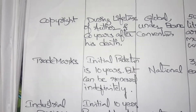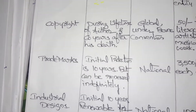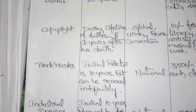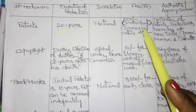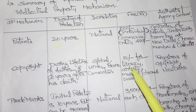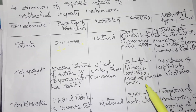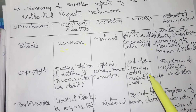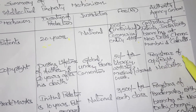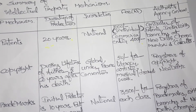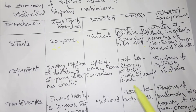The fee to register a copyright is 50 rupees for literary, artistic works, and so on. The copyright office is located in New Delhi — the Registrar of Copyrights is based there.